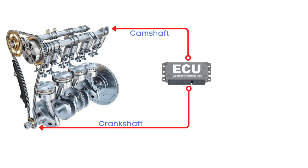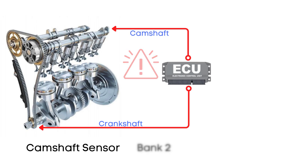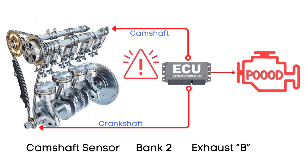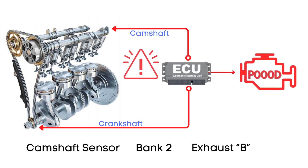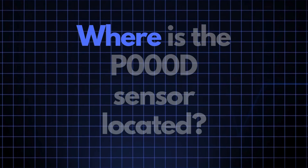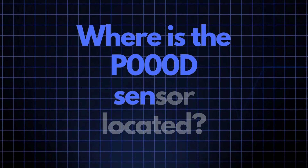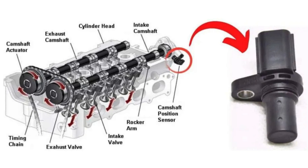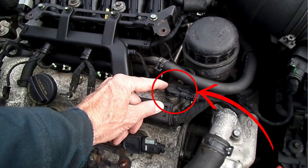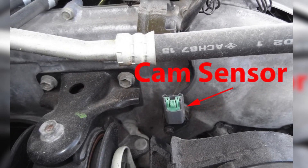The ECU regularly monitors the position of both the crankshaft and camshaft sensors. If it detects that the camshaft sensor for the bank 2 exhaust camshaft is out of alignment with the crankshaft, it triggers the P000D code to alert you of the issue. The camshaft position sensor responsible for triggering the P000D code is usually positioned close to the camshaft, though its exact location can vary depending on your vehicle's make and model.